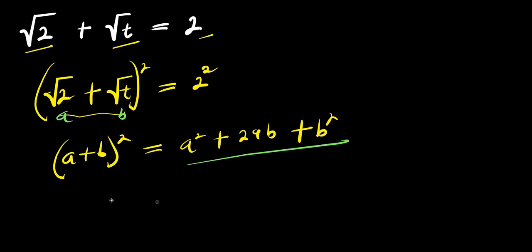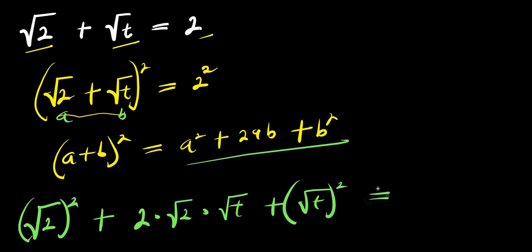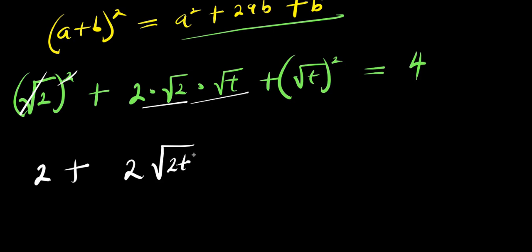So let's use this to expand. a squared will be root 2 to the power of 2, plus 2 times root 2 times root t, plus root t to the power of 2, and this equals 2 squared, which is 4. So from here, the squares cancel: I have 2 plus 2 times root 2 times root t — that is 2 root 2t — plus t, and this equals 4.